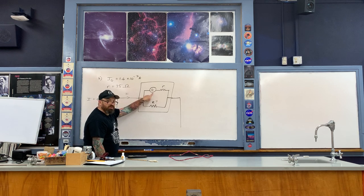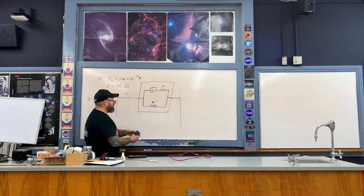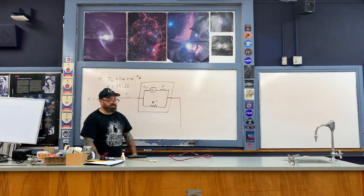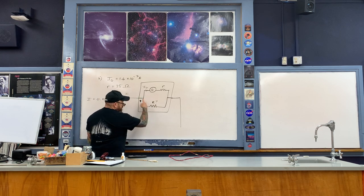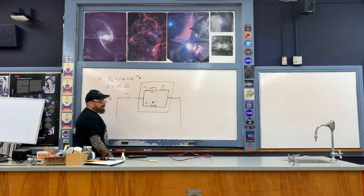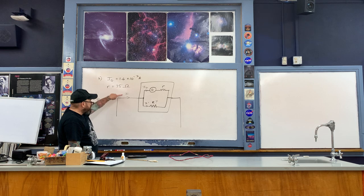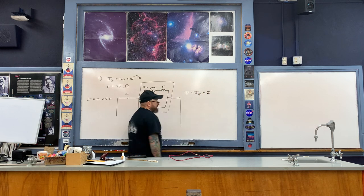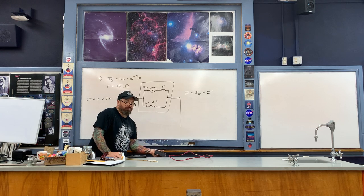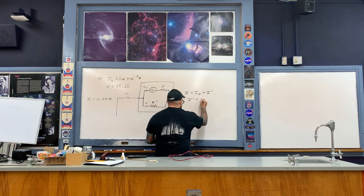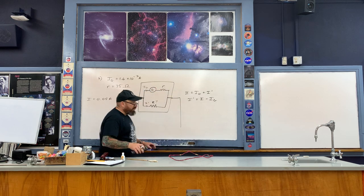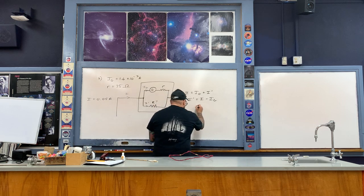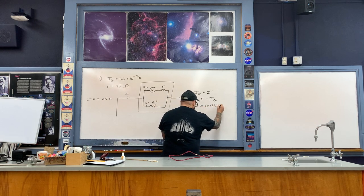We only want a tiny amount of the total current to go through the galvanometer because passing a large amount through it would break it. The current through the galvanometer is I sub G, causing the needle to swing to full scale deflection. The remaining current, I prime, takes the parallel path through the shunt resistor. Applying the junction rule: I equals I sub G plus I prime. Solving for I prime: 0.05 minus 1.6 times 10 to the minus 3 equals approximately 0.0484 amperes.